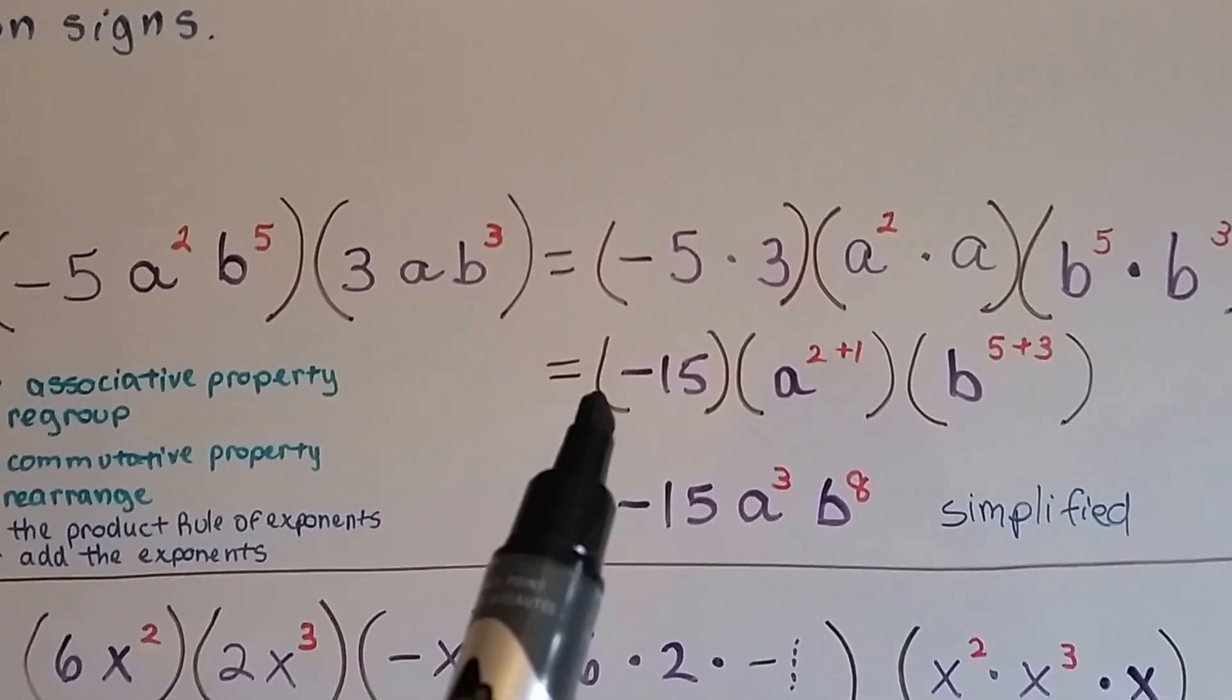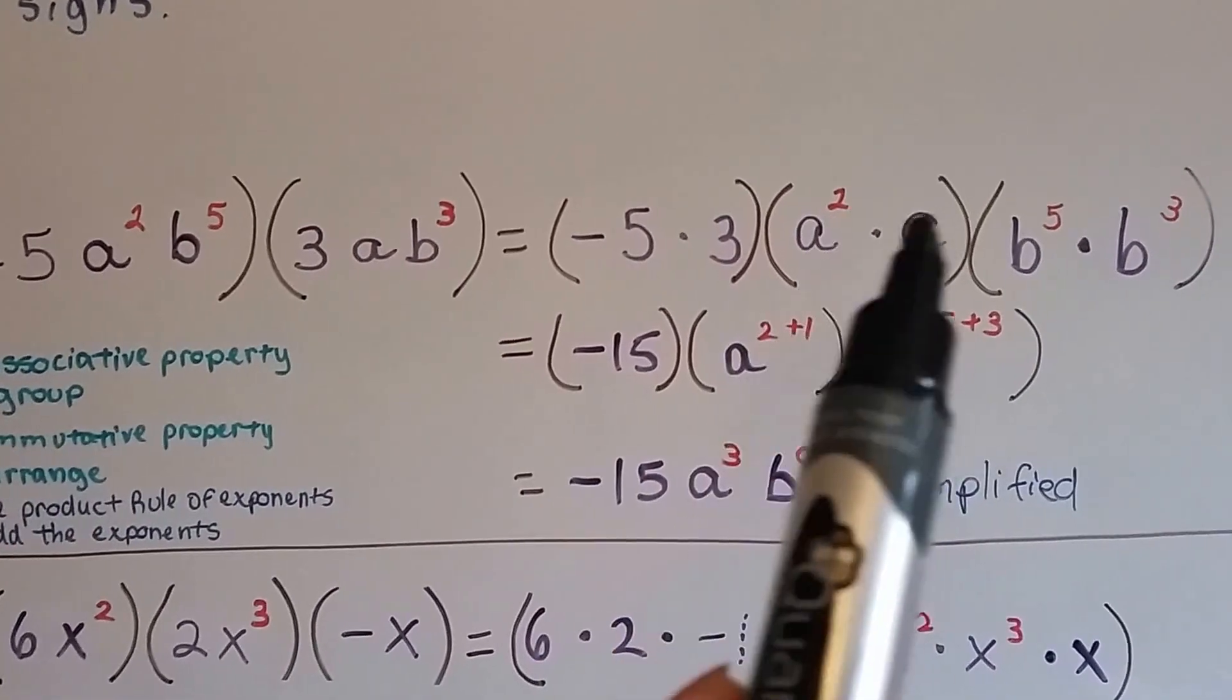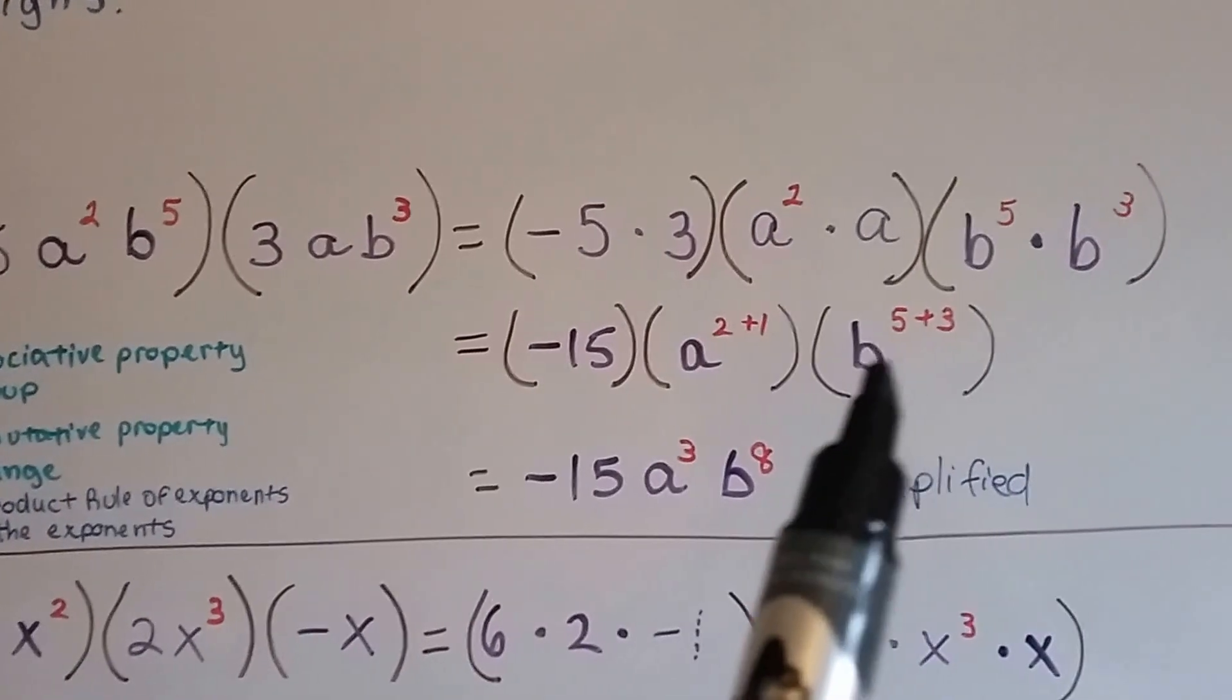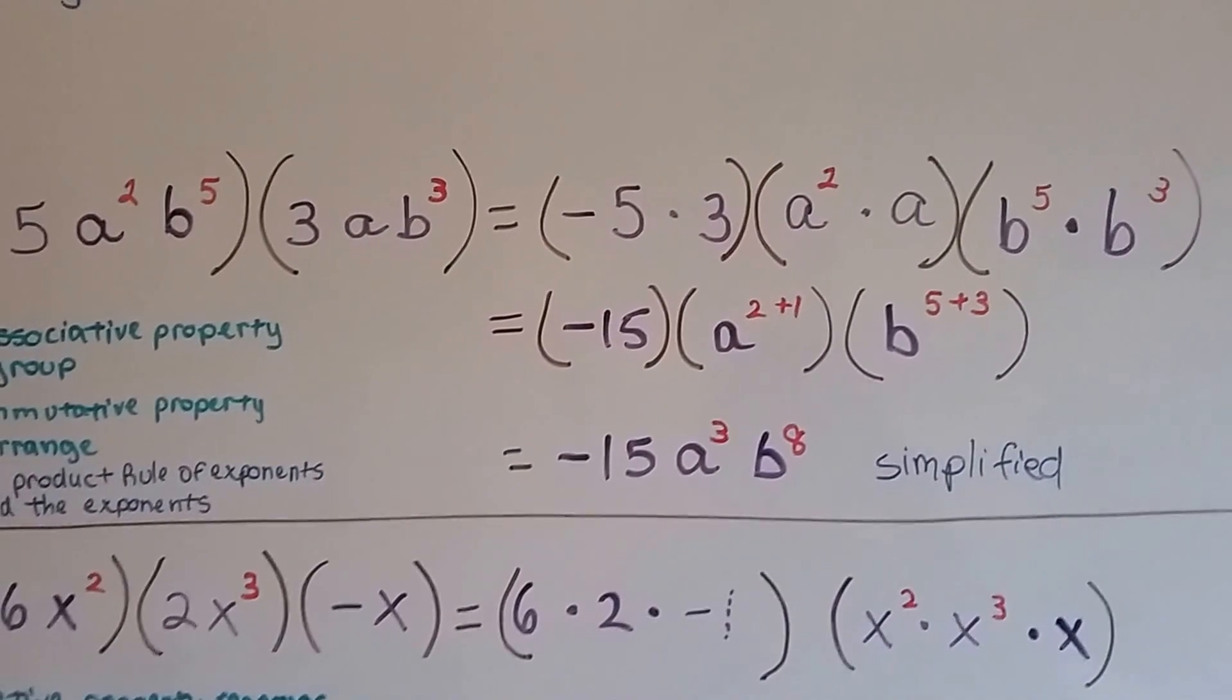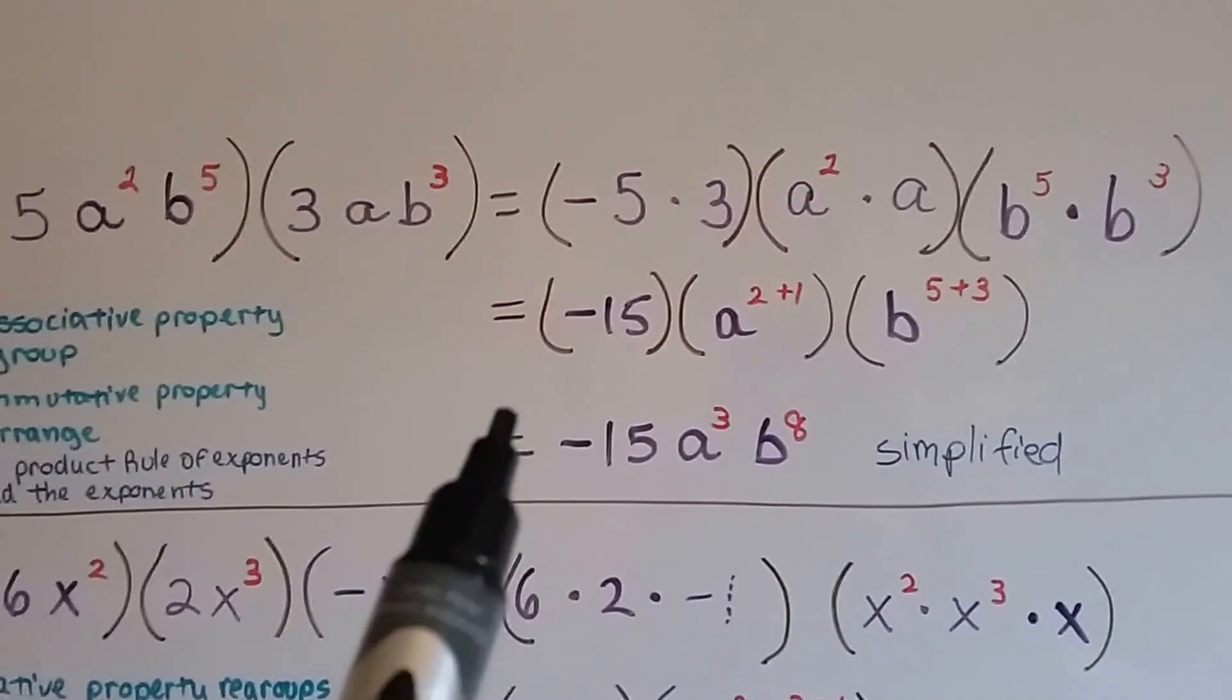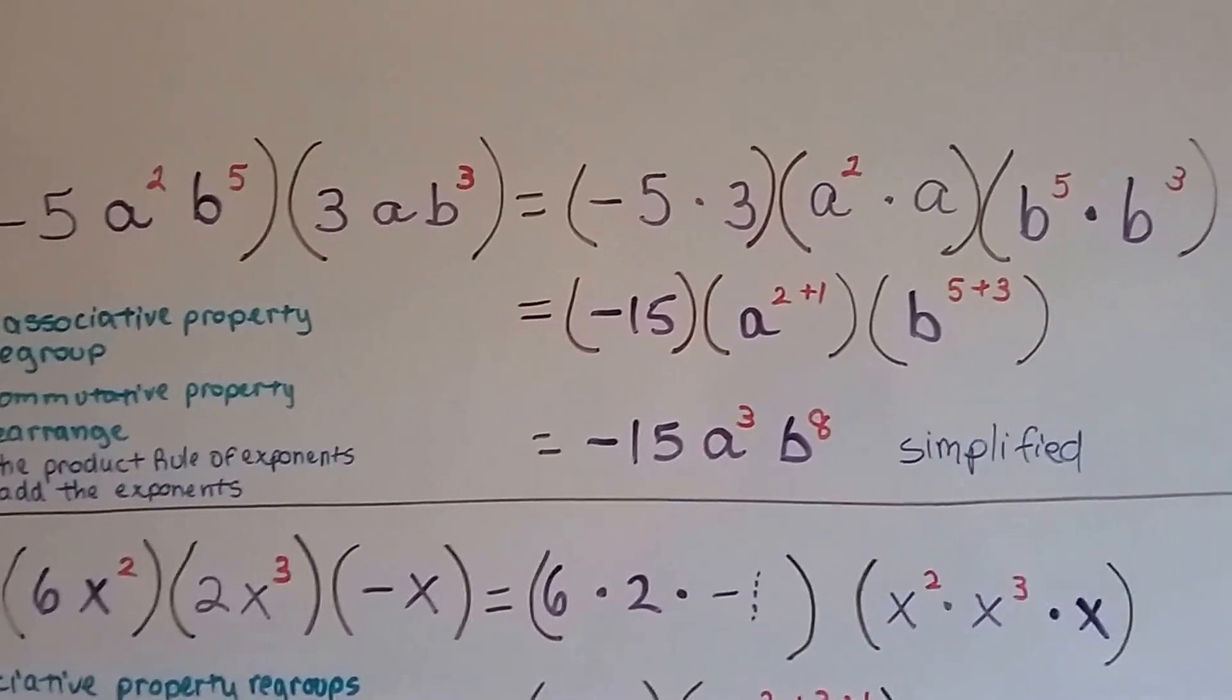So, now we do the negative 5 times 3. That's negative 15. This is a to the 2 plus 1. And this is b to the 5 plus 3. The product rule of exponents says we can add the exponents. When we simplify it, we get negative 15a to the third, b to the eighth.